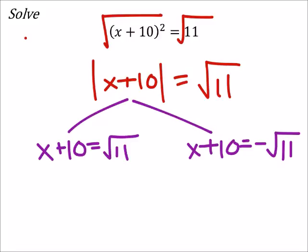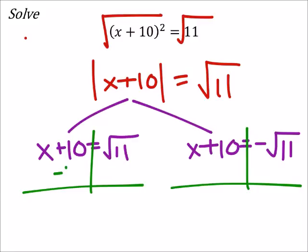Now what I would do to solve both of these, as it turns out, because I want x by itself on its own side of the equal sign - we want to isolate it - so I'm just going to subtract 10 from both of these.